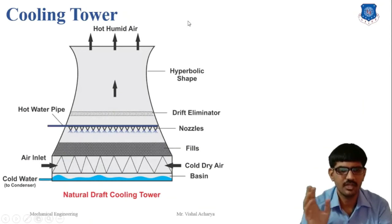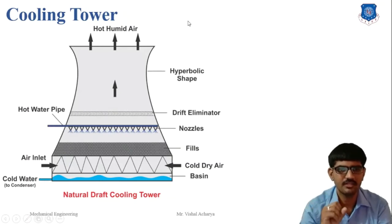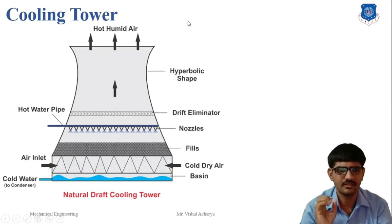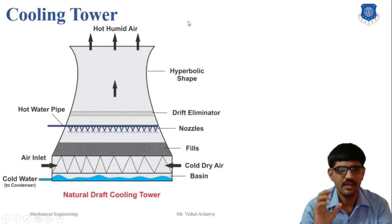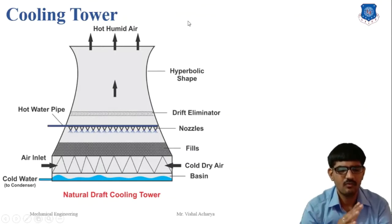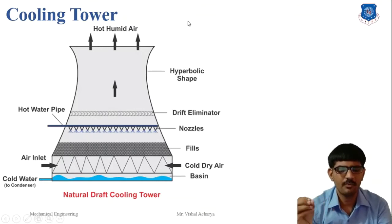The cooling tower is used where a large amount of cooling effect is required, like in a power plant or industrial area. The main principle of the cooling tower is evaporation. Hot water and air are directly in contact with each other, and the air extracts the heat from the water, making the water cool while the temperature of the air increases. Air also evaporates some water particles. This is the basic principle of the cooling tower.